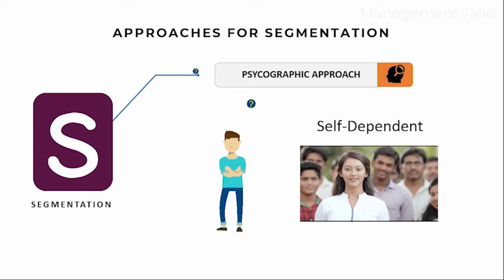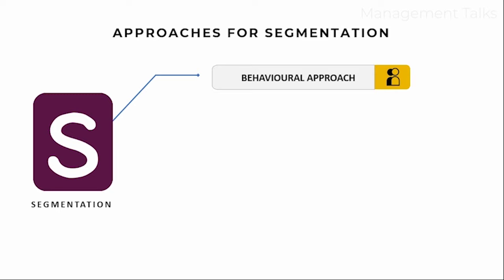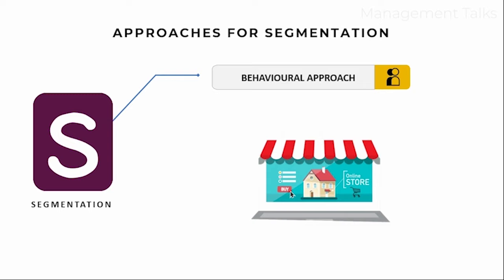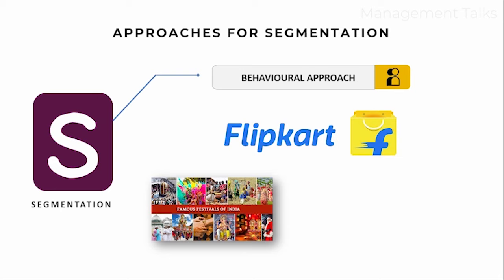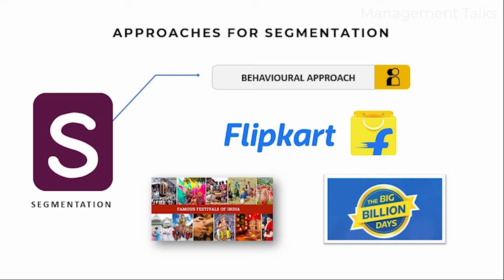The fourth is behavioral segmentation, where companies produce products on the basis of consumer behavior. This is very important for websites, mobile applications, or any online business. For example, Flipkart or any online shopping app will segment its market on the basis of consumer behavior during the festival season — that's why these apps offer sales during festival time. Companies can segment their market on these four bases, but it is not restricted to those. In short, a company can divide its market on any parameter — that is called segmentation.